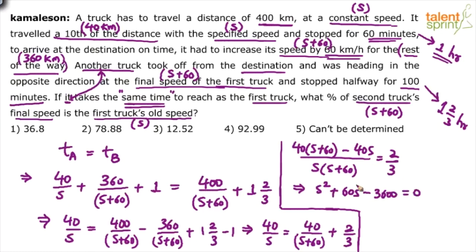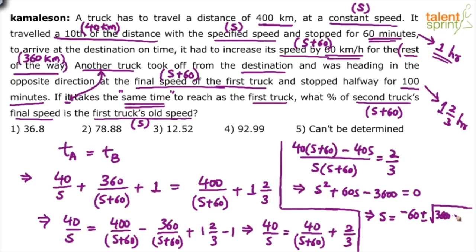Solving the quadratic S² + 60S − 3600 = 0 using the quadratic formula: S equals [−B ± √(B² − 4AC)] / 2A. Here B = 60, so B² = 3600; −4AC = −4(1)(−3600) = +14400. So S = [−60 ± √(3600 + 14400)] / 2 = [−60 ± √18000] / 2.